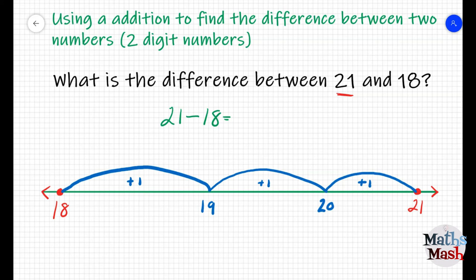If your number sentence looks different, you may have forgotten to write the largest number first. Here is the number line I created. You can see I have 18 on the left, under the dot, and 21 on the right, under the dot, and then my arrow.